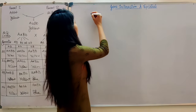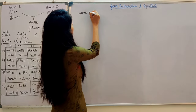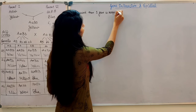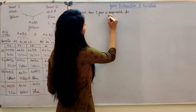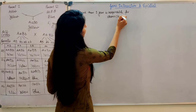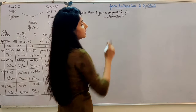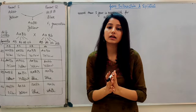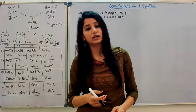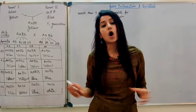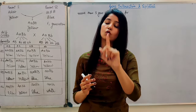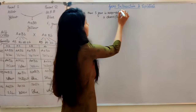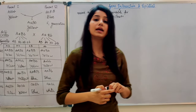In actuality, more than one gene is responsible for a characteristic. All these genes interact with each other, and in actuality, they develop each characteristic together. We call this gene interaction. We will see this through future examples.